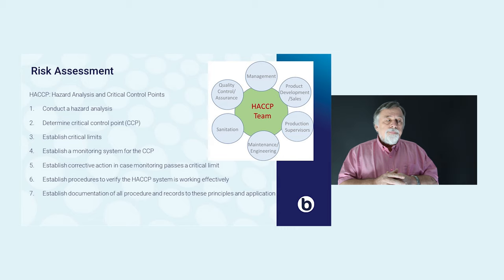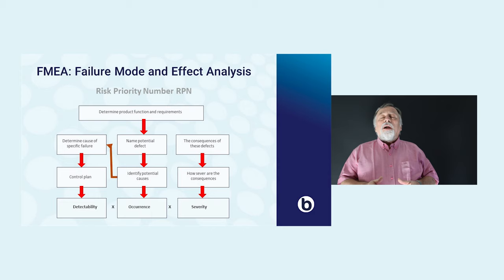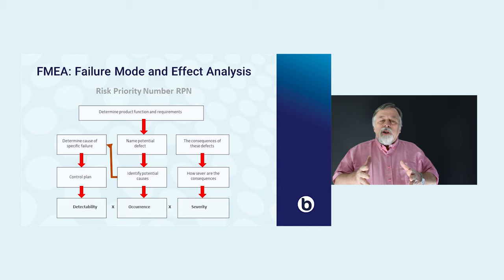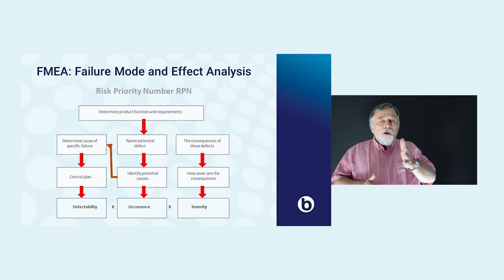Failure Mode and Effect Analysis. When you have a look at the diagram, you see a whole system of steps which lead to three variables: detectability, occurrence, and severity.